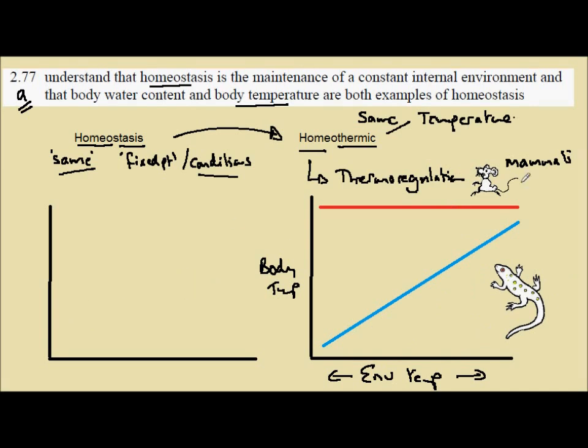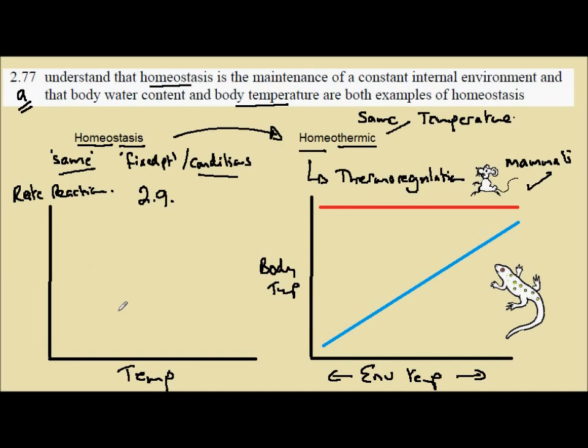The reason why mammals wish to maintain a constant body temperature—if we come back to some theory covered in syllabus statement 2.9. On our graph here we have temperature, and on the y-axis we have the rate of reaction of an enzyme catalyzed reaction.